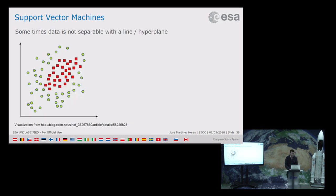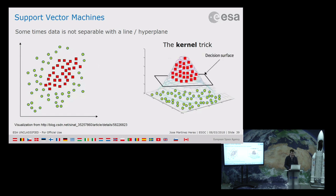Sometimes data is not linearly separable. For such cases there is the kernel trick: you invent a new dimension and map the data there — using polynomial or Gaussian mappings, for instance. When viewed in this higher-dimensional space, data that was not linearly separable can be separated by a hyperplane. This kernel trick is one of the key inventions of machine learning.